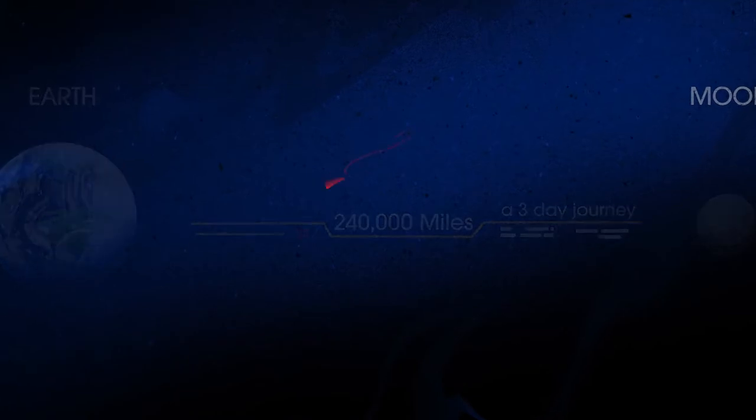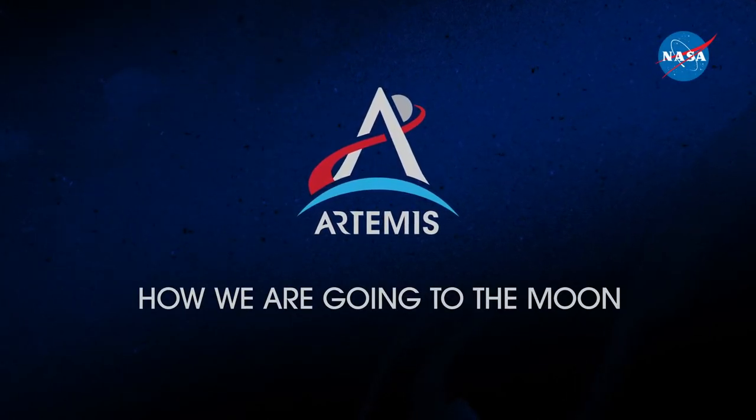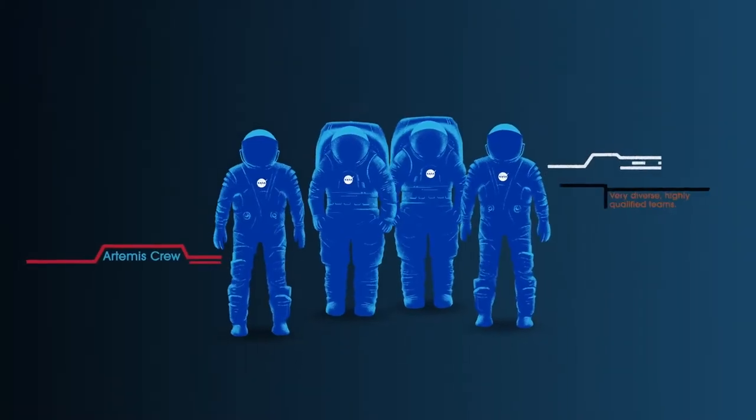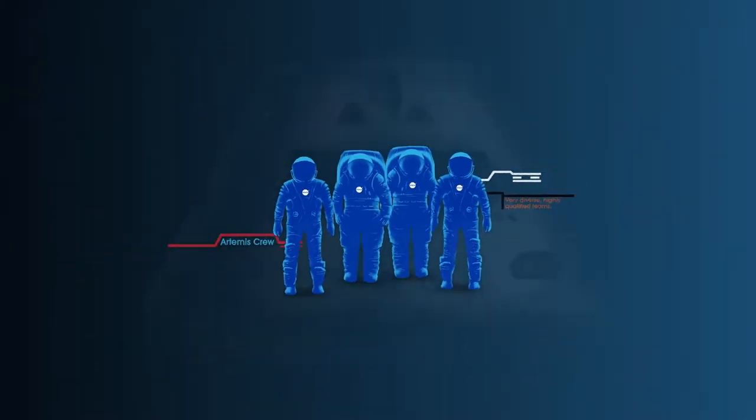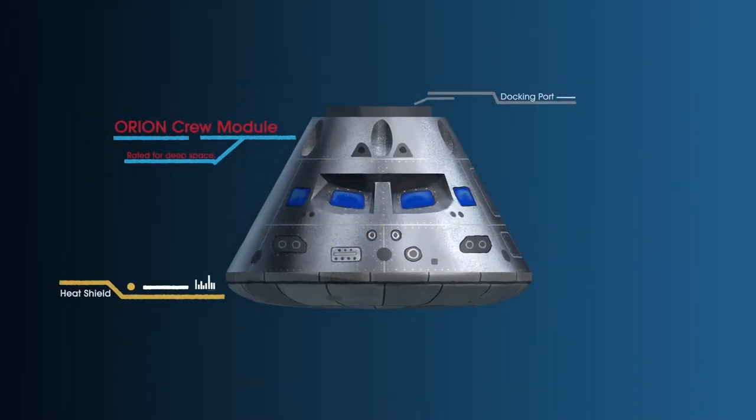So, what will an Artemis mission look like? Everything is designed and tested with our most important element in mind, the astronauts. This is their deep-space, human-rated spacecraft called Orion, built in three parts.